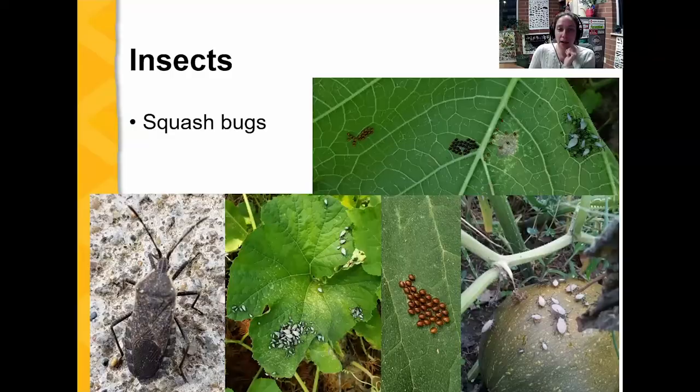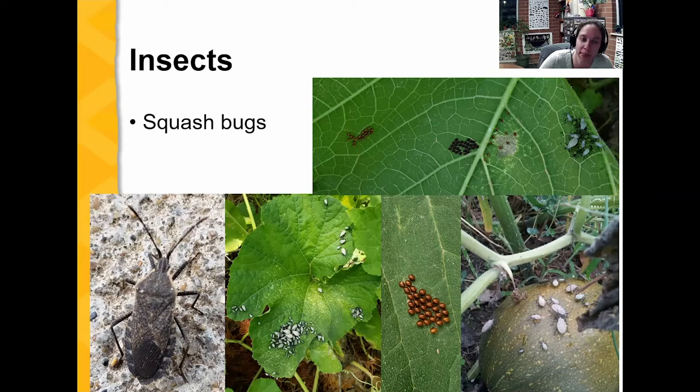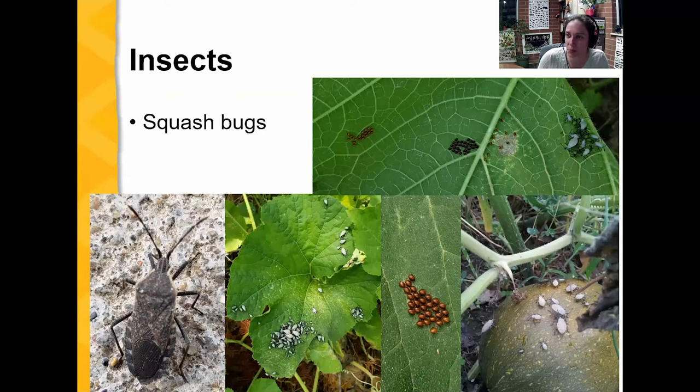Typically when I put up this slide, everybody groans. Squash bugs. Sometimes these are confused with stink bugs, but they are a little longer than stink bugs. They have a piercing sucking mouthpart, like a big straw. You can actually see this spot here and the lighter, sandier colors on this leaf — that's from the piercing sucking action. They're sucking out the plant juices.